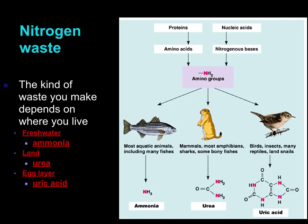Uric acid, on the other hand, is insoluble. It cannot diffuse into cells so it's not poisonous, but it does take a large amount of ATP to be produced. It's found in animals that live in very dry areas where there's not much water, because almost no water is needed for its removal. It's also low in mass, so birds that fly use it as their waste product. Additionally, birds and reptiles lay eggs, and the animal within that egg cannot get rid of waste products — uric acid is not poisonous, whereas ammonia and urea are, and those would accumulate and kill the animal inside the egg.